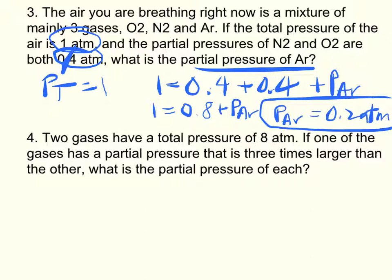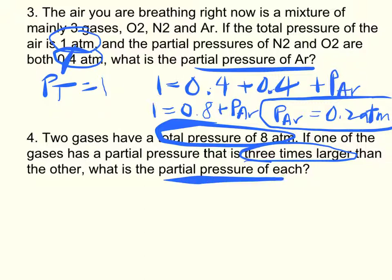Number four: two gases have a total pressure of 8. If one of the gases has a partial pressure that is three times larger than the other, what is the partial pressure of each gas? Well, this is saying that 8, our total, equals P1 plus P2.